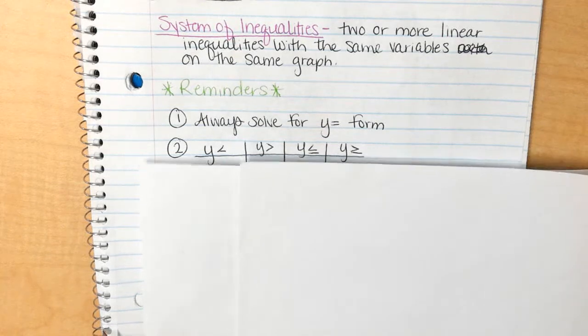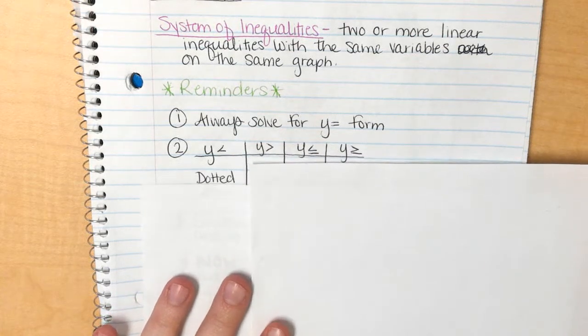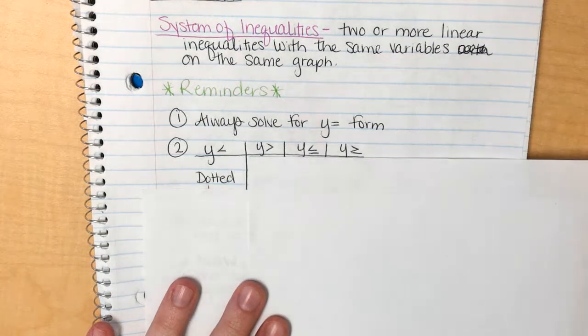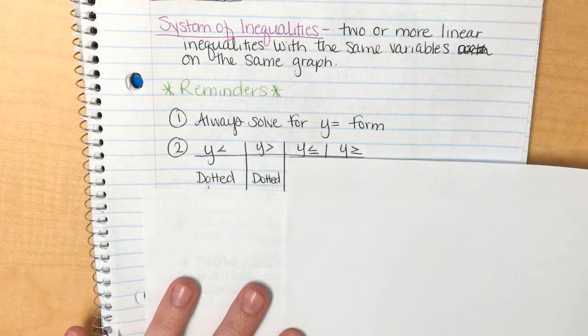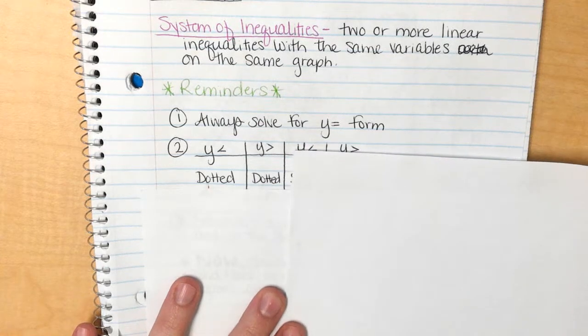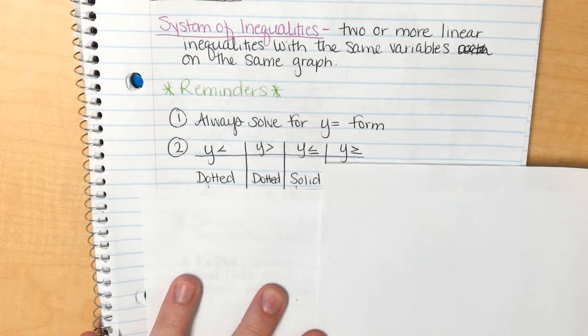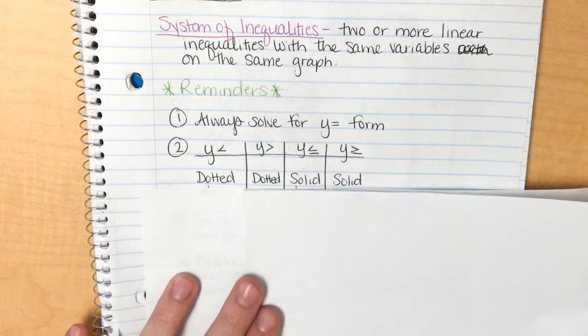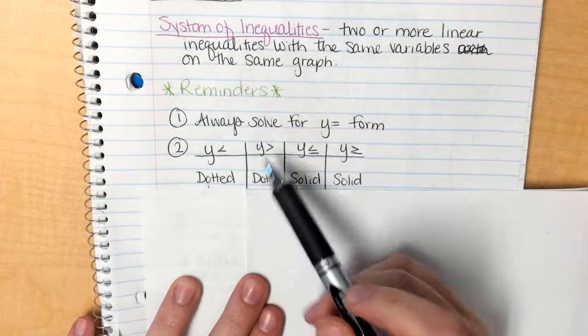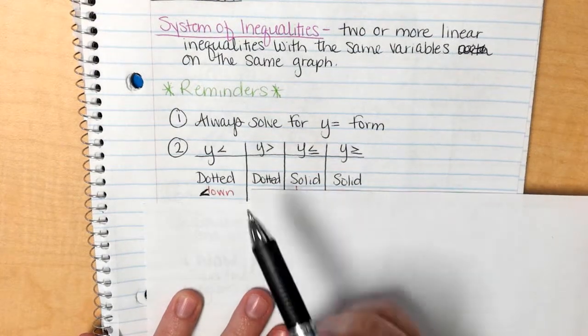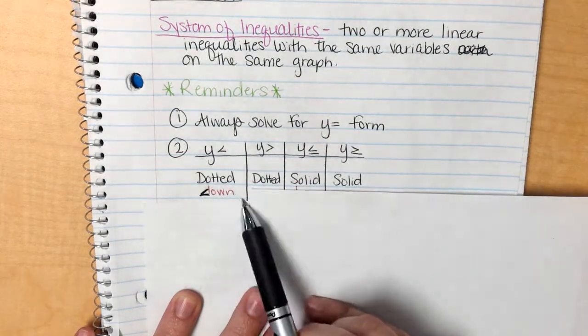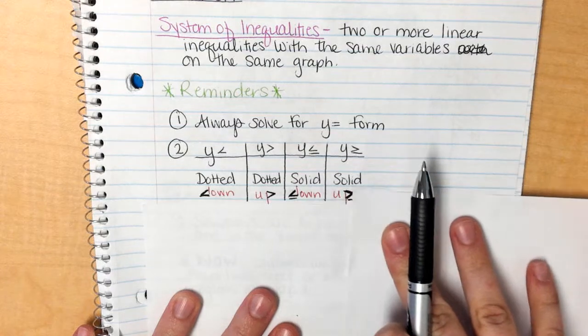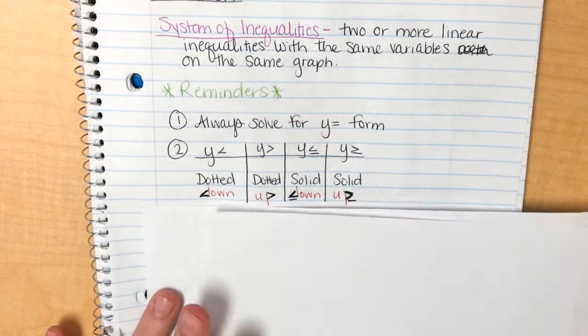So remember, for when we have less than, it does not have a solid line, so it is a dotted line. Same thing for greater than - it does not have a solid line, so it's a dotted line. For less than or equal to, it has a solid line, and same thing for greater than or equal to. And then as for the shading of up and down, remember, the symbol tells you which way to shade. It's a less than symbol, but if I make him a letter, he makes the letter D, so that's shade down. This guy makes the letter P, so we shade up, shade down, shade up.